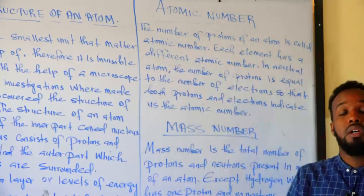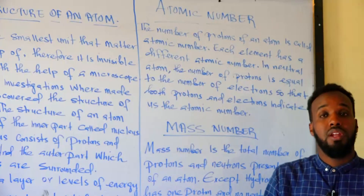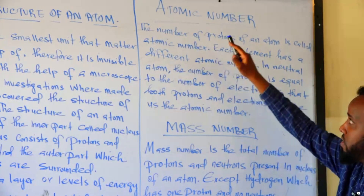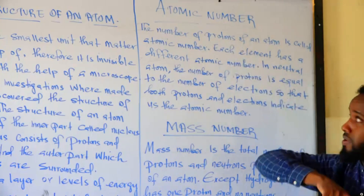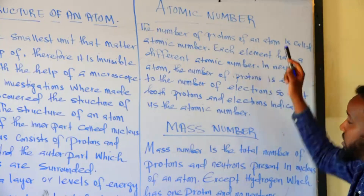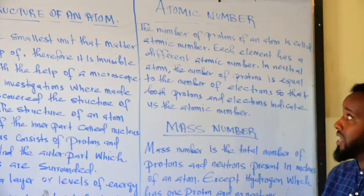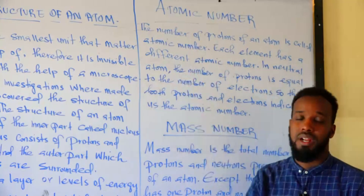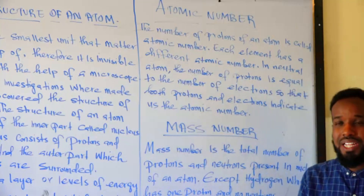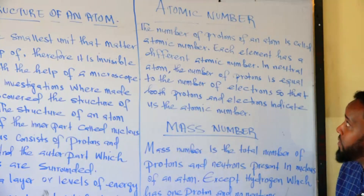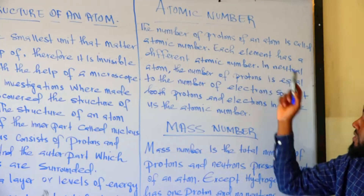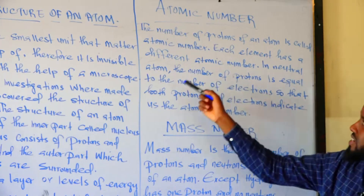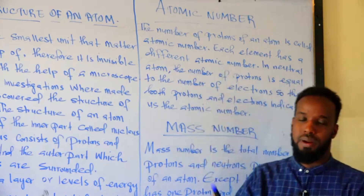The number of protons in an atom is called the atomic number. Each element has its own atomic number.